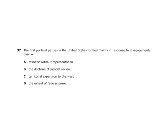The first political parties in the United States formed mainly in response to disagreements over the extent of federal power. Thomas Jefferson was on one side, Alexander Hamilton on the other — Hamilton wanting more federal power, Jefferson wanting less. Also think about the Anti-Federalists Patrick Henry and George Mason, who said the federal government shouldn't have so much power, versus the Federalists who said it should.